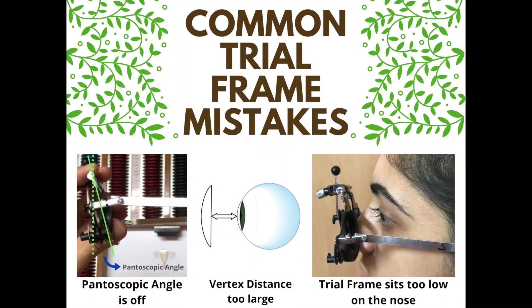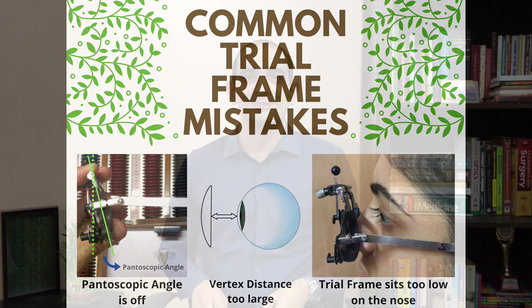Avoid these common trial frame mistakes to ensure your patient is looking through your intended prescription. Ensure that the vertex distance is optimum and not too large. Ophthalmic frames are designed to have a vertex distance of about 13 mm. If the trial frame sits too far from the patient's eyes, it modifies the prescription they are looking through, especially for high myopes or hyperopes.